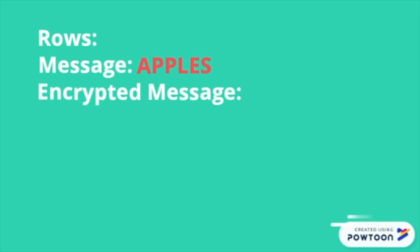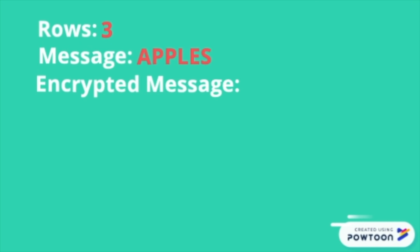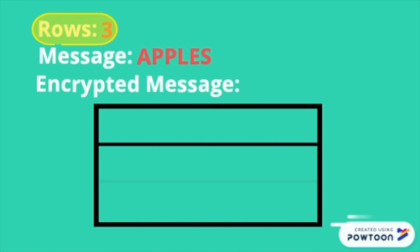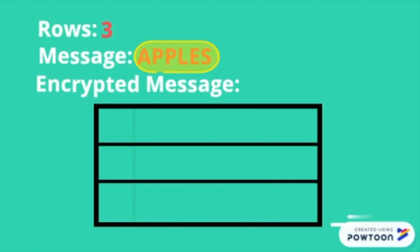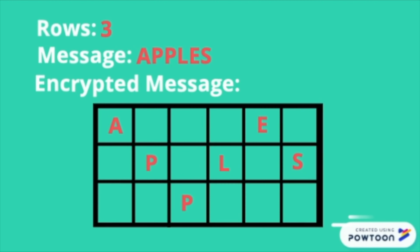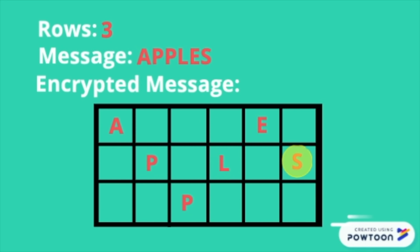The message that we will encrypt is 'apples' and we are given that there will be three rows. You should start by drawing a table — the number of rows should be the value of rows given, and the number of columns should be the number of letters in the message. Fill in the table by writing each letter in a zigzag pattern. To get the final encoded message, read the letters from left to right starting at the top row and moving down, so 'apples' will become A-E-P-L-S-P.